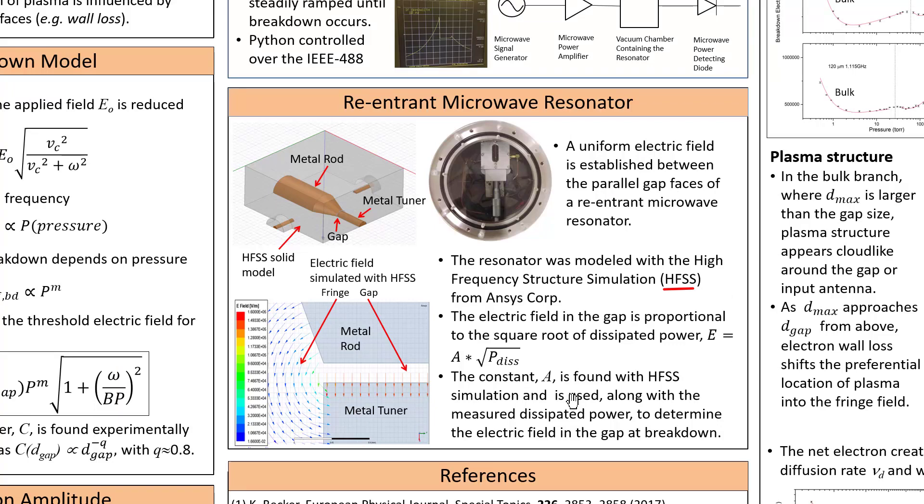HFSS is used to determine the electric field inside the micro-gap and relate it to the power dissipated, which we can actually measure, and so we are able to determine the electric field in the micro-gap for a given input power, and hence we have a way to find the threshold electric field.